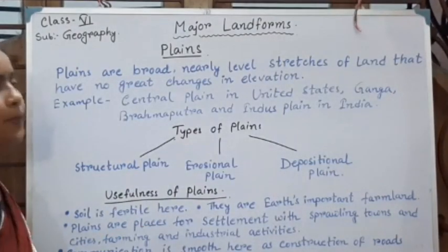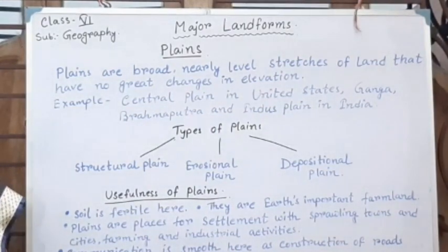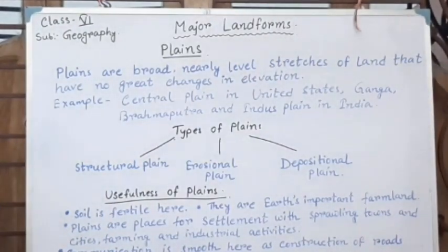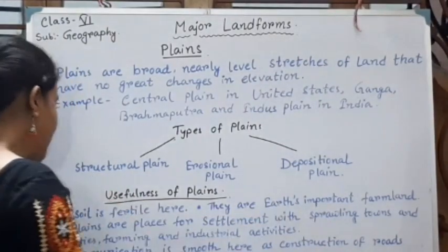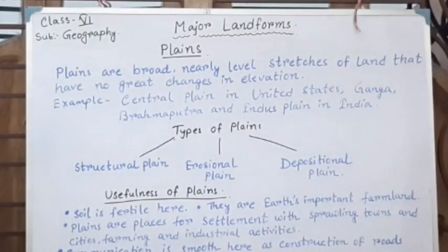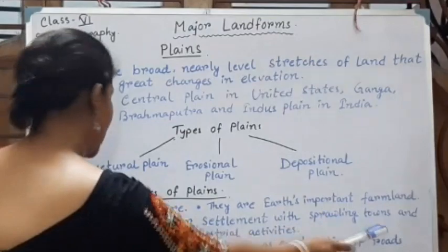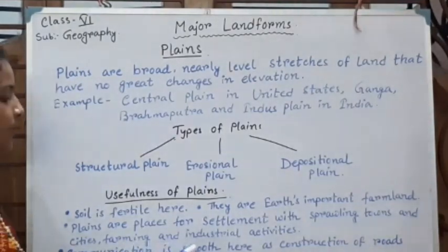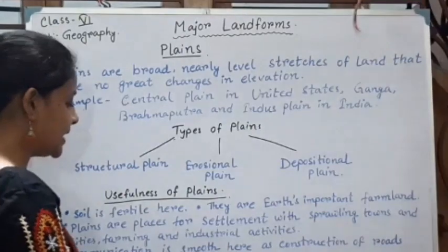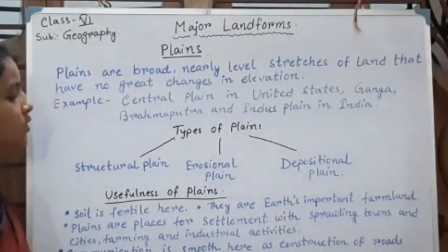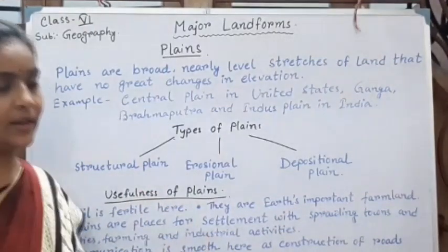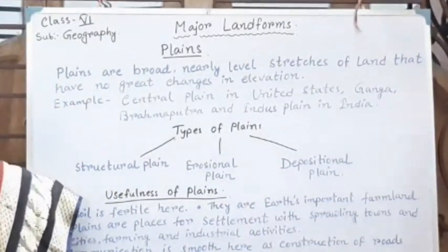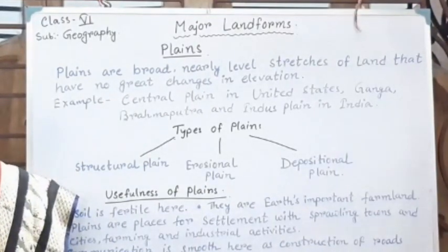The usefulness of plains: people find many activities here. Soil is fertile, which means growing crops is very easy. Plains are important farmland. Plains are also places for settlements, with sprawling towns and cities, farming, and industrial activities. Communication is easier as construction of roads and railways is relatively simpler here. For this reason, plains are the most important region for human settlement.